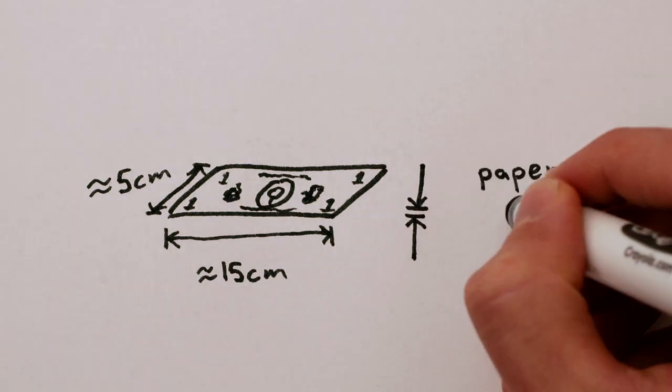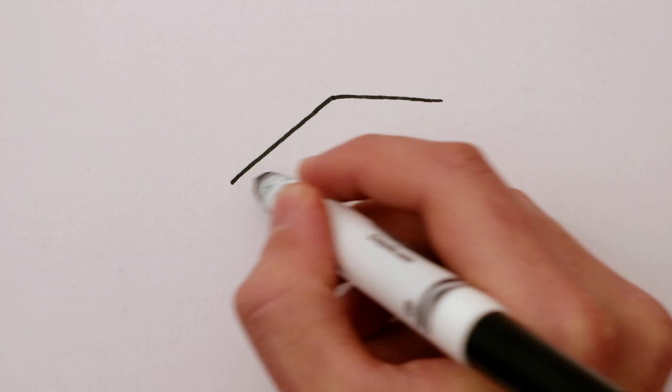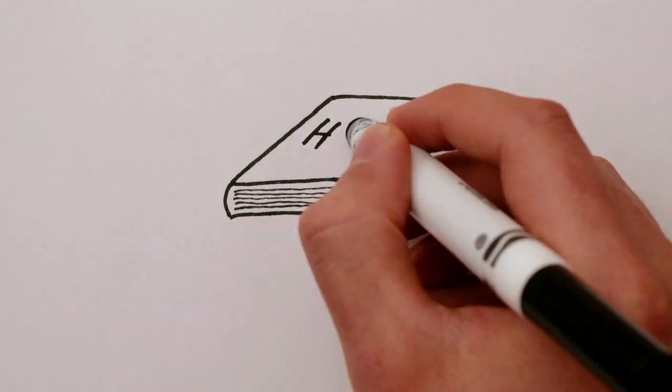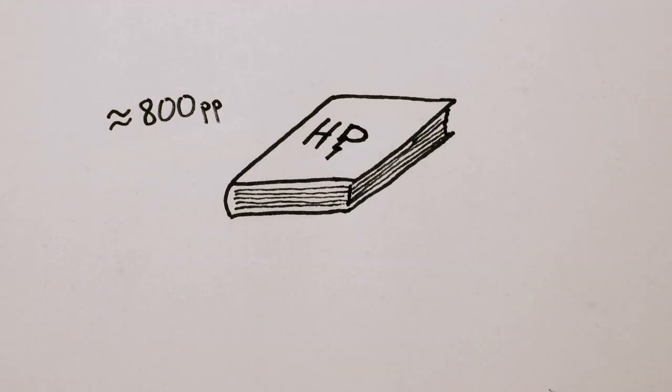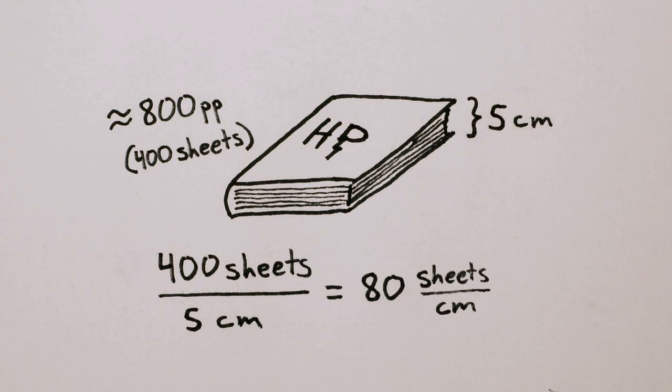Now how thick is it? We don't know that either, but money is made out of paper, and we do know that those Harry Potter books were around 800 pages long, or 400 sheets of paper. And I think the books were about 5 centimeters thick, so that gives 80 sheets per centimeter.